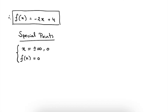Why is this a special point? Because when f of x is 0, this means that our graph will cross the x-axis. And it means that our function will change sign. And this means that at this point our function will switch signs from positive to negative or from negative to positive.